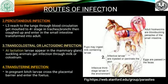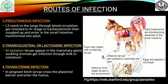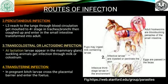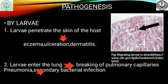The third route of infection is the transmammary or lactogenic infection. In case of a lactating animal, the larvae appear in the mammary gland and the suckling animal gets infection through the milk. The fourth route of infection is trans-uterine infection, in which the larvae can cross the placental barrier and enter the fetus, causing infection in the fetus.